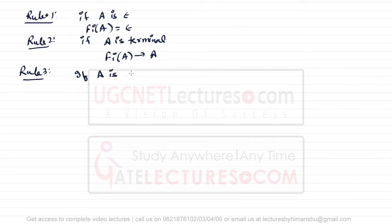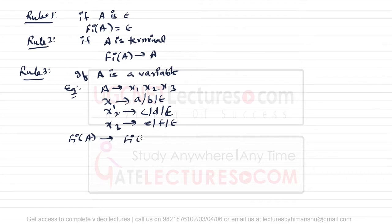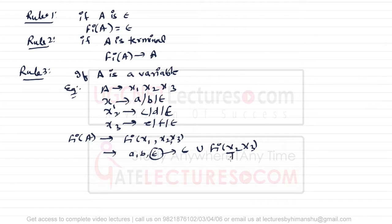Rule number three: if A is a variable, and we have a production A → X1 X2 X3, where X1 is defined as {a, b, epsilon}, X2 is defined as {c, d, epsilon}, and X3 is defined as {e, f, epsilon}, then to find FIRST(A) we write it as FIRST(X1, X2, X3). FIRST(X1) is {a, b, epsilon}, and because epsilon is present, we union it with FIRST(X2), which is {c, d, epsilon}. Since epsilon is present again, we also union with FIRST(X3), which is {e, f, epsilon}.